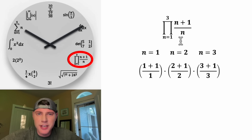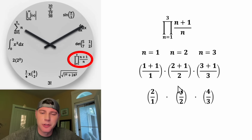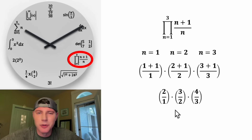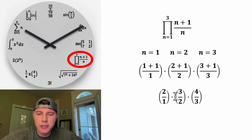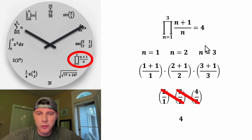So this represents the product (2/1) times (3/2) times (4/3). We can simplify by canceling: the 2 on top cancels with the 2 on bottom, and the 3 on top cancels with the 3 on bottom. In the end we have 4 over 1, which is equal to 4. So this whole product is equal to 4, and that's why this is in the 4 o'clock slot.